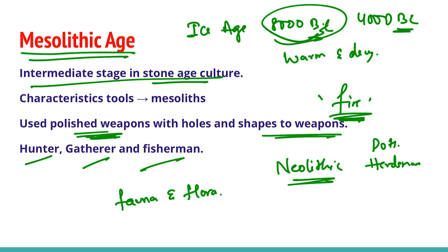Mesolithic sites are found in good numbers in Chota Nagpur, in central India, and also south of river Krishna. So far only a few finds of Mesolithic age have been dated scientifically, but there is no doubt that these remains were found before the Neolithic age. It is very interesting to note that on the northern spurs of the Vindhyas in Belan Valley, all three phases — Paleolithic, followed by Mesolithic, and then Neolithic — are found in sequence.